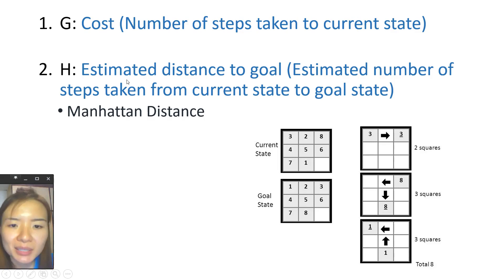Manhattan distance between two points is the sum of vertical distance plus the horizontal distance. For example, for three, the current state position is here but for goal state the position is here. The Manhattan distance will be two plus zero which is two.